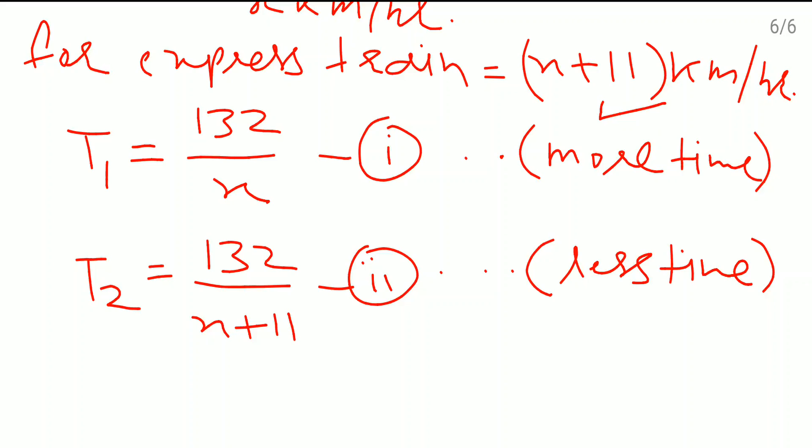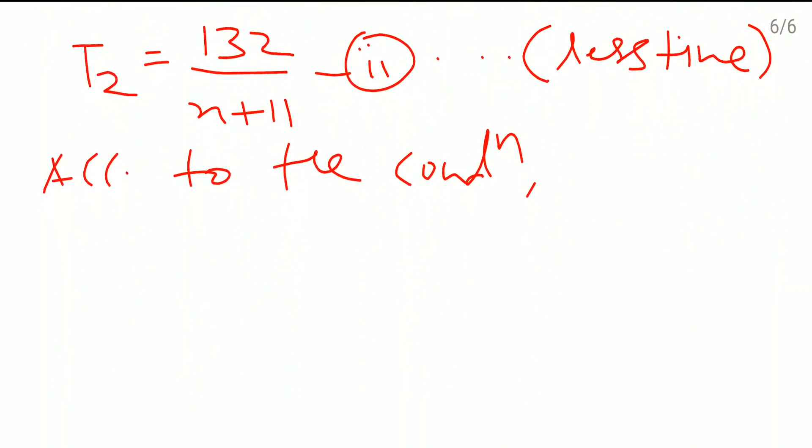Now according to the condition, time required by the passenger train is more, so I need to write down t1 minus t2. More time minus less time which is equal to 1 hour.